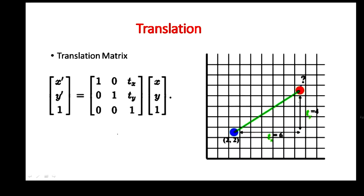You can see an example here. We take an object at position 2 comma 2. The object is shifted to another position — shifted by 6 units in the x axis and 4 units in the y axis. So the new coordinate in the x axis is 2 plus 6 equals 8, and in the y axis it is 2 plus 4 equals 6. The object is moved from 2 comma 2 to 8 comma 6. This is called translation from an original coordinate to a new coordinate.